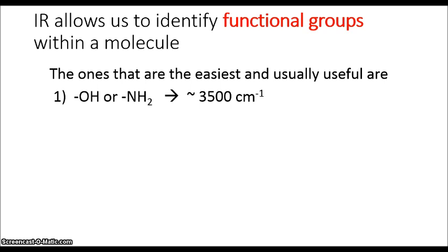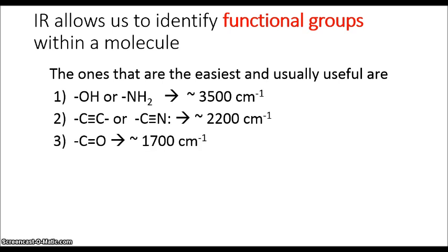The hydroxyl or the amine groups show a peak around 3500 cm⁻¹. Then we have our carbon triple bonds, so alkynes and nitriles, which show a peak around 2200 cm⁻¹. Then we have our carbon oxygen double bonds, the carbonyls, and these show a peak around 1700 cm⁻¹.